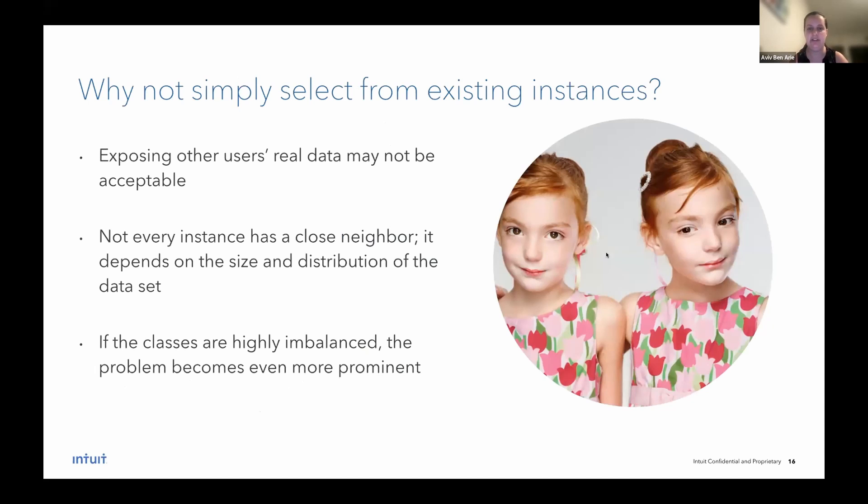If we're able to obtain all of these criteria, then this would probably be the optimal counterfactual generator. But this is very hard to achieve. So if it's so difficult to generate counterfactual synthetically, why don't we just select them from the existing instances, the existing data? So for some use cases, exposing other users real data may not really be acceptable. For example, if we're dealing with financial data or health related data, medical data, this isn't something that we would like to do. Also, not every instance in the data has a close neighbor. It depends on the size and the distribution of the data set. And if the classes are highly imbalanced, this problem is even worse because the chances are very low that we'll find another instance existing in the data that's from the opposite class and is also relatively close.